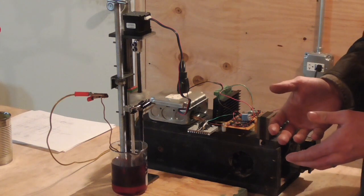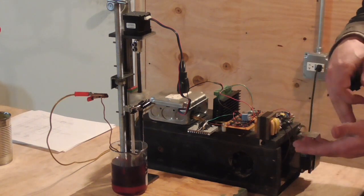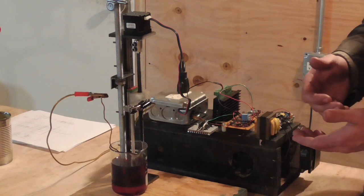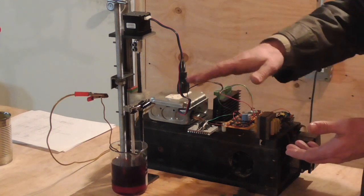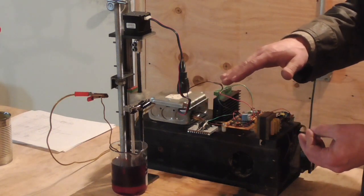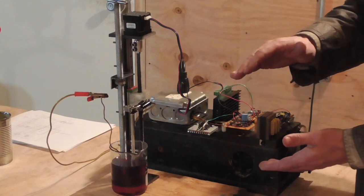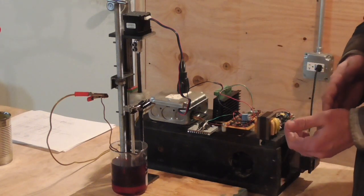If it senses that the current is too high, implying that we've contacted the workpiece with the electrode and created a short circuit, then it will back off. While if it senses that it's too low, then it will feed it in closer to the workpiece.